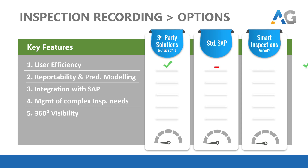User efficiency is all about how maintenance-staff-friendly the solution is. Third-party products score high as they have been specifically designed around this feature. Smart Inspections also scores high due to its ergonomic design. But for standard SAP, this is one of the weak spots. By the way, there are rate meters at the bottom of the screen indicating the cumulative scores for each option.